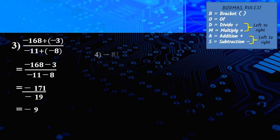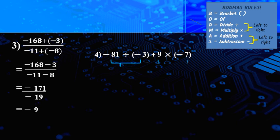Number 4: negative 81 divided by negative 3, plus 9 times negative 7. We have three operations: divide, plus, and times. BODMAS says solve divide and times first, from left to right. Negative 81 divided by negative 3 — same sign, positive — equals 27. Nine times negative 7 — different sign, negative — equals negative 63. Then: 27 minus 63 — different sign, 63 is bigger, negative — so the answer is negative 36.